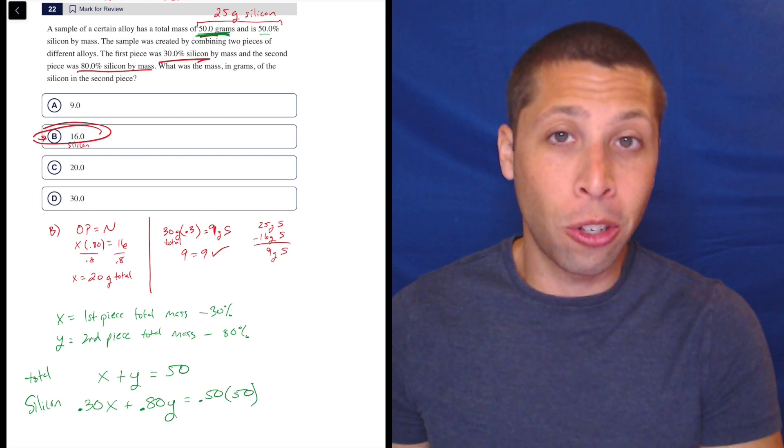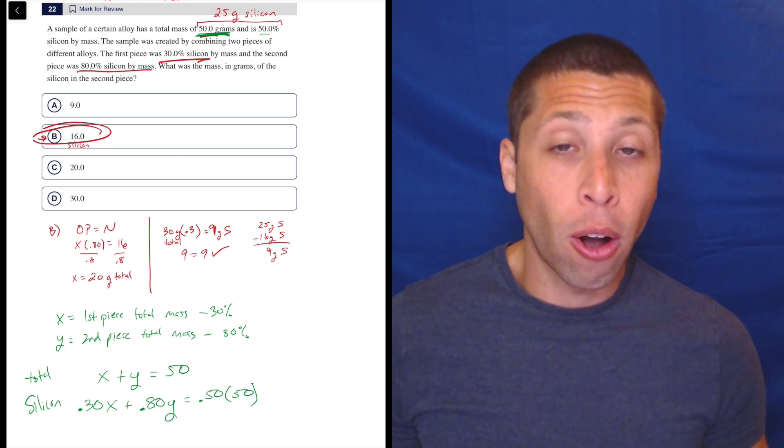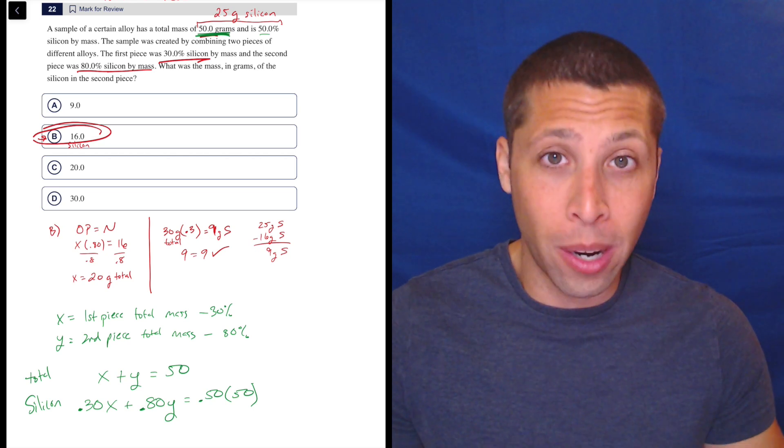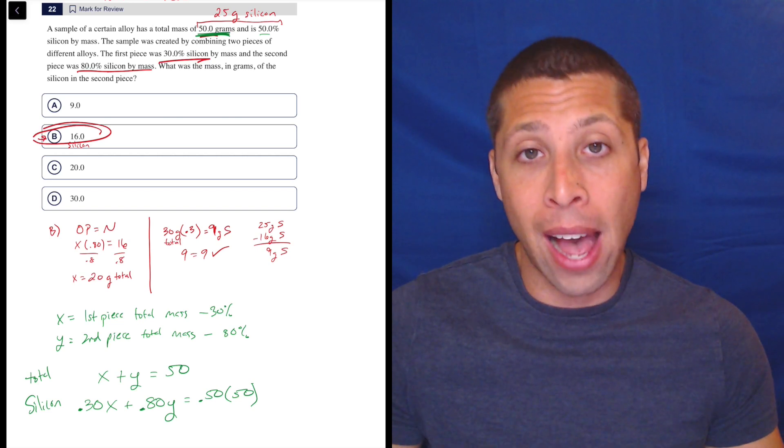Now, this might look familiar to you because in lots of situations on the SAT, we have stories where we come up with equations that kind of look like this. I call these quantity and value equations. The first equation is giving me the quantity, the total number of grams that we have.